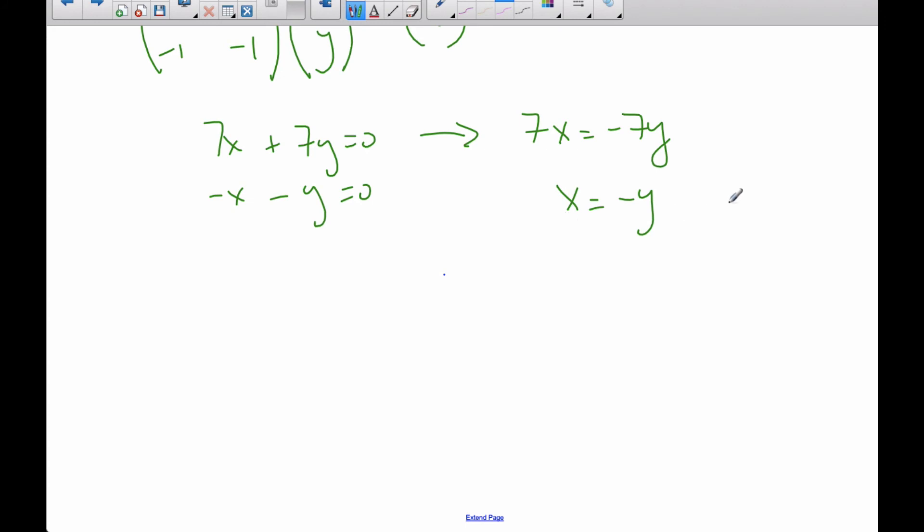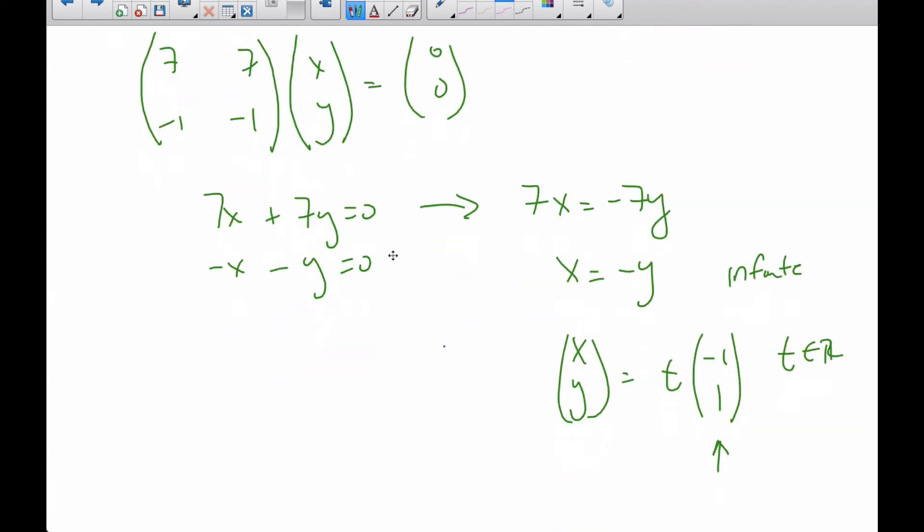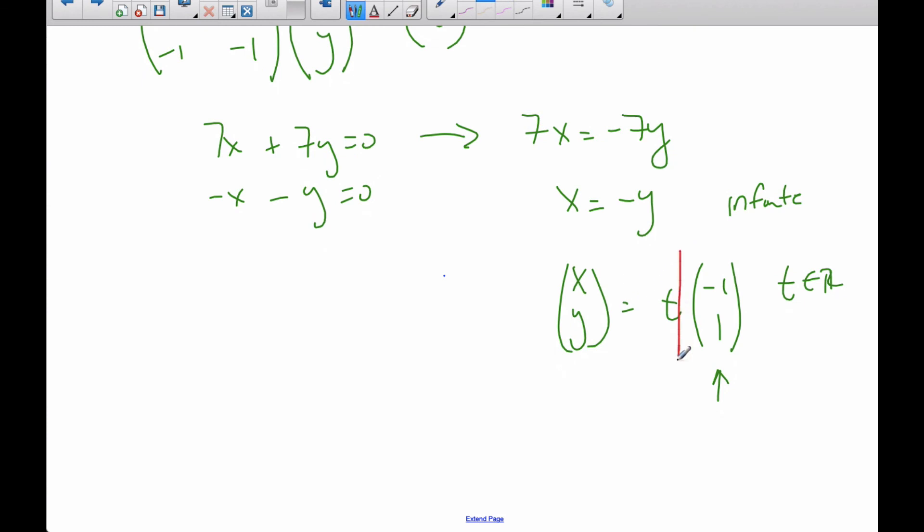And so, I had said earlier that there's an infinite amount of solutions. Well, y could be 1, and x would be negative 1. y could be 2, right? And x would be 2. If y is 3, x is negative 3, and so on and so forth. And so, what we do is we just choose one value. I know the x, y. I choose one value. Let's make y equal to 1. That means x will be negative 1. And we put a parameter t in front, where t is any real number. And then, this is the infinite amount of solutions. This is one of the eigenvectors, or the eigenvalue of negative 5. So, this here is one of the infinite eigenvectors.